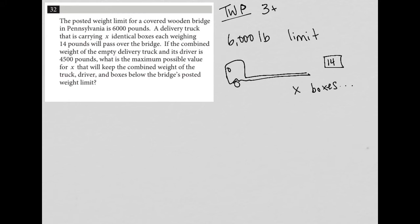If the combined weight of the empty delivery truck and its driver is 4,500 pounds - so I have a 6,000 pound limit, and the truck with its driver is 4,500 pounds, which means if I find the difference between these two things - here's where all the work happens, by the way, in the in-between, understanding and translating. I have 1,500 pounds left that can be attributed to the X number of boxes at 14 pounds each. Let's keep going.